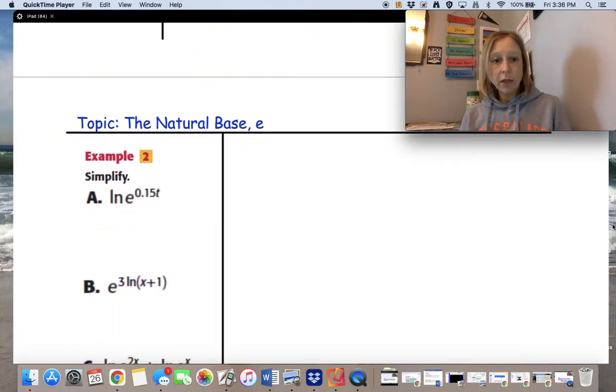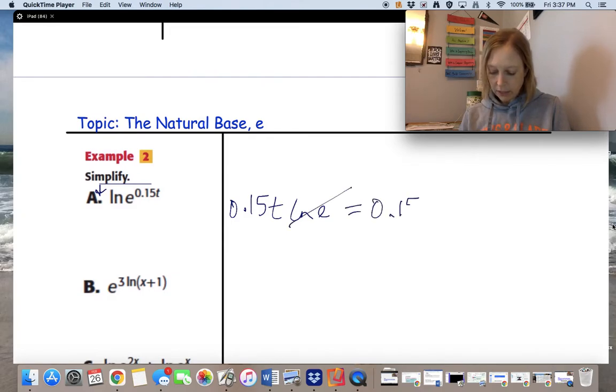Let's try a few together. The first one I see is the ln of e to the power of 0.15t. So remember, if this is a power, we can drop it down in front. So I'm going to rewrite it with that in front: 0.15t natural log of e. But remember, the natural log of e is just 1. So this is just equal to 0.15t.